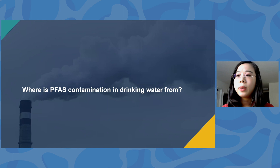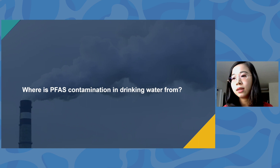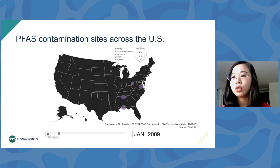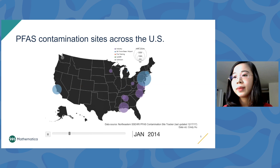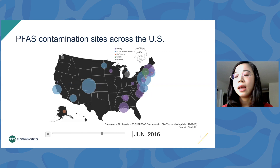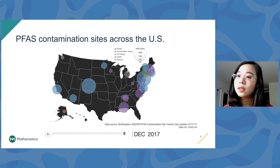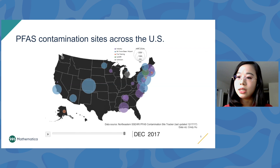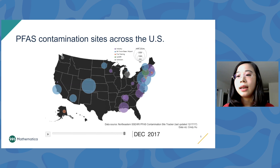We know PFAS contamination is widespread. So how did it make its way into our drinking water? This film shows the chronology of discovering contamination sites across the United States. Each bubble represents a site; the color shows the type of source — purple for fluorochemical manufacturing sites, blue for airports — and the size of the bubble shows the size of the local community impacted. Initially, contamination was discovered near industry sites; then near military bases and airports; and more recently, more diverse types of sources. The question is: can we see its impact in our drinking water?